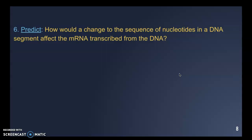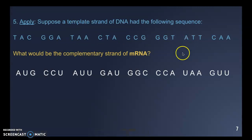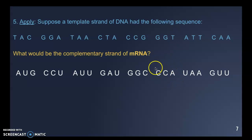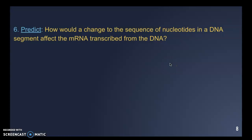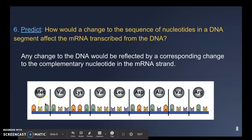Number six asks: how would a change in the nucleotide sequence affect the mRNA being transcribed? If a G in the DNA were changed to a C, that position on the mRNA would become a G instead, potentially changing the codon and therefore the amino acid brought in. Any change in the DNA causes a change in the RNA strand, which can change the amino acids — represented by the gray circles in the picture.